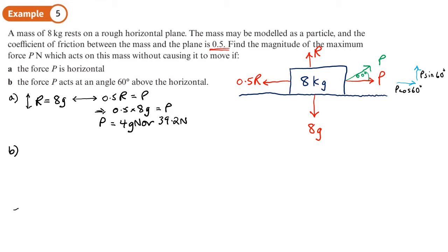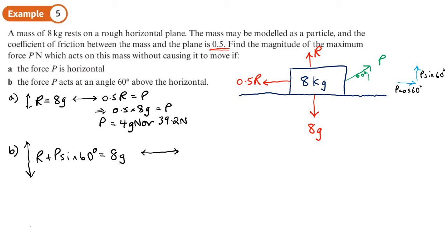For part b we use the green force at 60 degrees. With horizontal and vertical components, our force equations change. Resolving vertically: R plus p sin 60 equals 8g. Resolving horizontally: 0.5 R equals p cos 60, which is slightly different from part a.